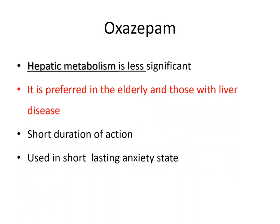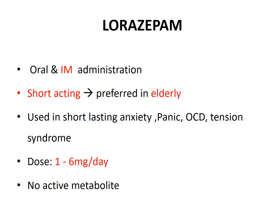Oxazepam has a very important feature: it is the benzodiazepine with least hepatic metabolism, so this agent can be safely used in those with hepatic impairment. It has a very short duration of action and is usually used in short-lasting anxiety states. Then there is lorazepam. We can administer this agent both orally as well as intramuscularly; it has very less injection site complications and can be safely administered through the intramuscular route. It is a short-acting agent, safe in elderly patients, and used in short-lasting anxiety conditions like panic episodes, tension syndrome, and obsessive compulsive disorder. The most common dose is 1 to 6 milligrams per day, and this agent does not produce any active metabolites, so it does not have a prolonged duration of action.